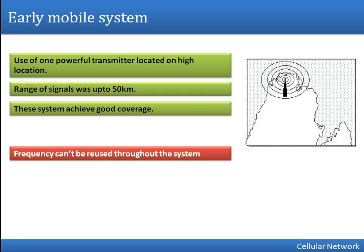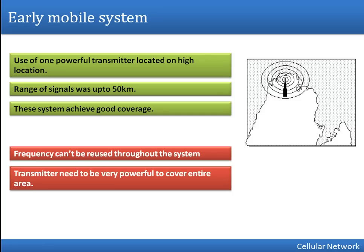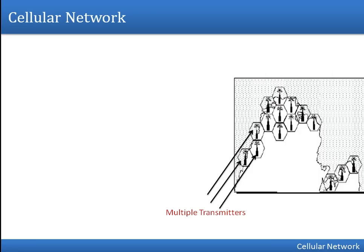The problem with this approach was that if a frequency was used in the region of this coverage, that same frequency cannot be reused by other users — so the frequency reuse concept cannot be used. Second, the transmission needs to be very powerful; if it is not powerful enough it cannot cover the entire region. Now, what did cellular networks suggest as a solution?